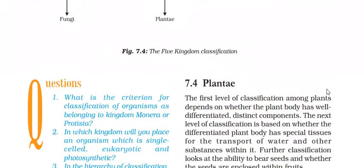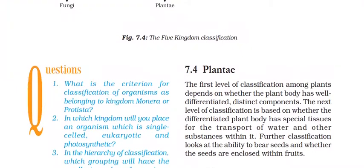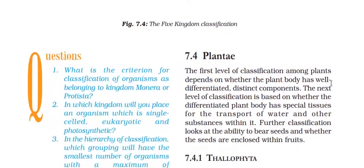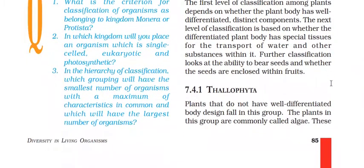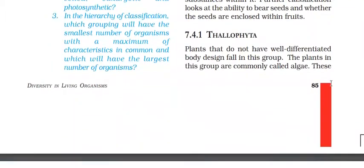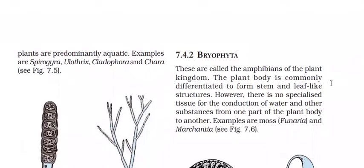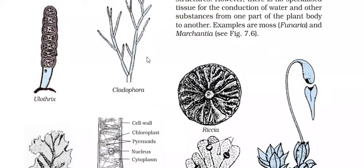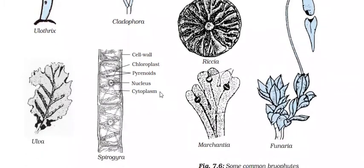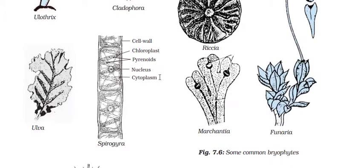The first level of classification among plants depends on whether the plant body has well-differentiated, distinct components or not. Plants that do not have a well-differentiated body design are in Thallophyta — these plants are called algae. They are aquatic. Examples include spirogyra, ulothrix, cladophora, and chara. In the diagram of spirogyra, you have to label the cell wall, spiral-shaped chloroplast, pyrenoids (protein storage granules), nucleus, and cytoplasm.